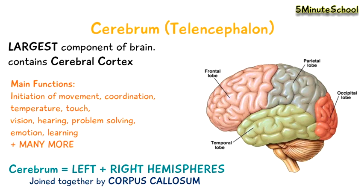The cerebral cortex is further classified into four lobes: the frontal lobe, parietal lobe, temporal lobe, and the occipital lobe.